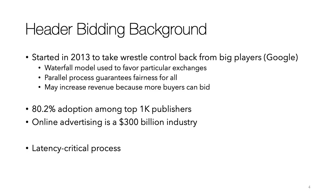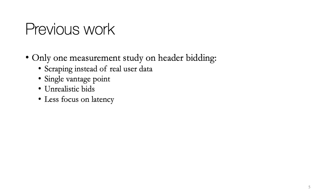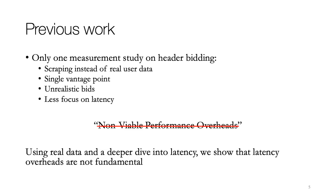But because the user's browser is at the center, this entire process is very sensitive to network latency. In previous work, there's only been one measurement study on header bidding. To do their analysis, they scrape websites instead of using real data, and they scrape from a single vantage point, so their network view is limited. Moreover, because there are no real users involved, the bids that advertisers are sending are unrealistic. They don't focus much on latency and don't identify the causes of the latency they observe. They conclude that header bidding has non-viable performance overheads, meaning latency. But based on real data that we collect and a deeper dive into latency, we identify what causes the latency and how it can be addressed. We show that latency overheads in header bidding are not a fundamental problem and can be addressed easily.